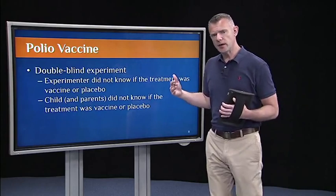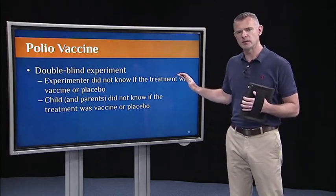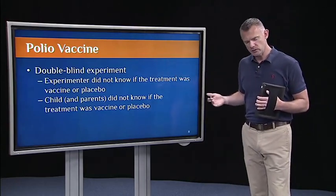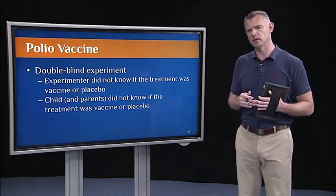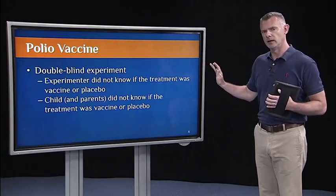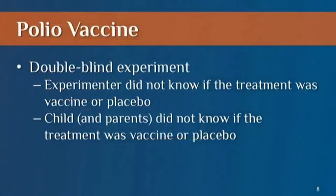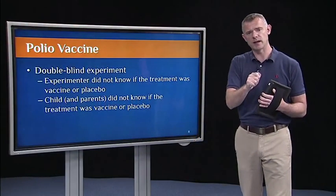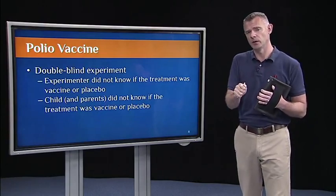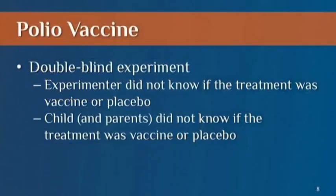One of the cool things about using the Salk vaccine trial as an example is that it was a double-blind experiment, and those are actually pretty rare in experimental psychology or in experimental trials in general, because it's difficult to do. What I mean by double-blind is that the experimenter didn't know if the treatment they were giving to the child was the placebo or was the vaccine. No one on site at the time knew which one the child was getting, and the child and the parents didn't know if they were getting the vaccine or the placebo.